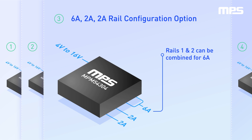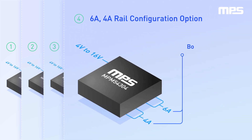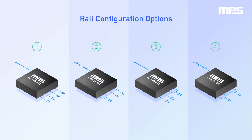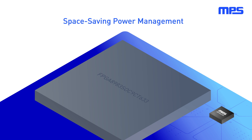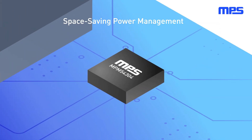Furthermore, channels 1 and 2 can be paralleled to provide up to 6 amps of output current. Alternatively, all four channels can be combined into two channels with up to 4 amps and 6 amps of output current respectively. The MPM54304 offers flexible variable output configuration with 4, 3, and 2 channel options and various setup configurations, available in an ultra-thin LGA package.